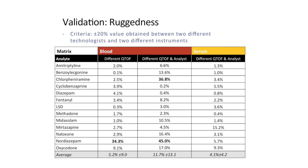I think this highlighted that slightly more concentrated standards were used for the ruggedness validation in blood between the different QTOFs and analysts than for the sera measurement. Some of the difference in measured concentration for chlorpheniramine and nordiazepam may be explained by using standards which were a little bit too concentrated, still manifesting in the variability between different QTOFs and analysts.